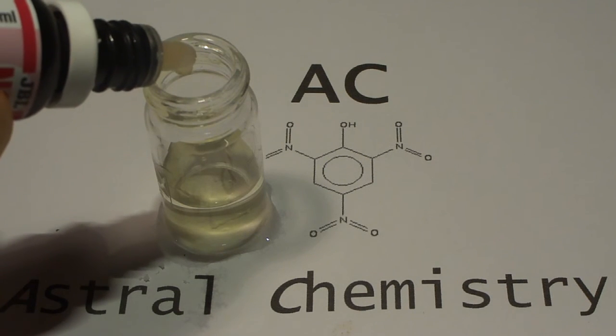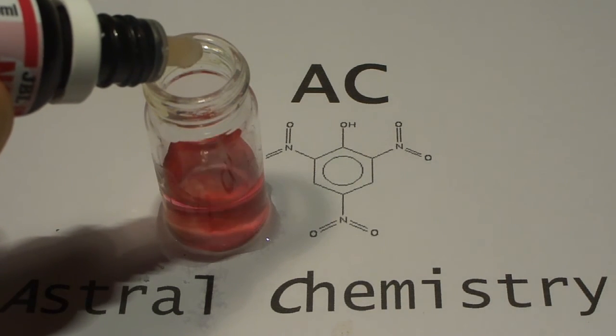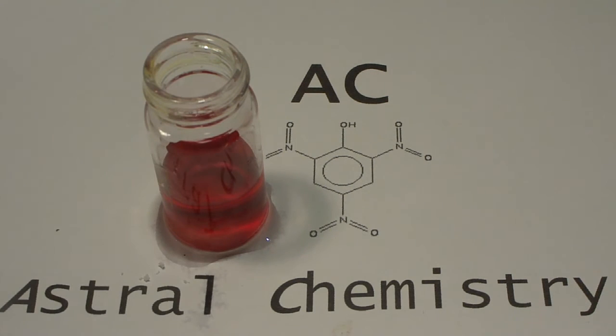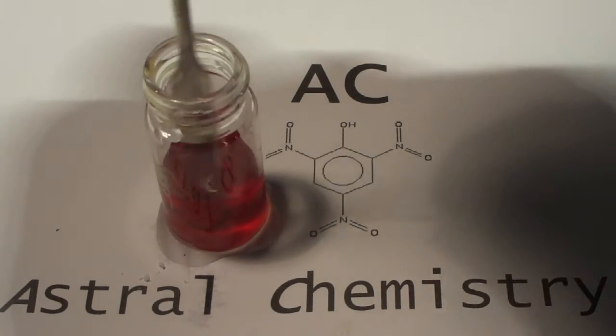This creates the diazonium salt we talked about. Now, we add a few drops of a 1-naphthalamine solution. The color of the test solution instantly turns a nice red color. However, the red dye can actually be extracted from the solution with an organic solvent like DCM.